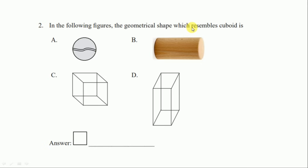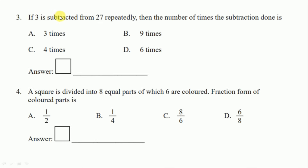Question number two: in the following figure, the geometrical shape which resembles a cuboid. This shape is a sphere, this one is a cylinder, this one is a cube, and this one is a cuboid. So our correct option is option D, cuboid.